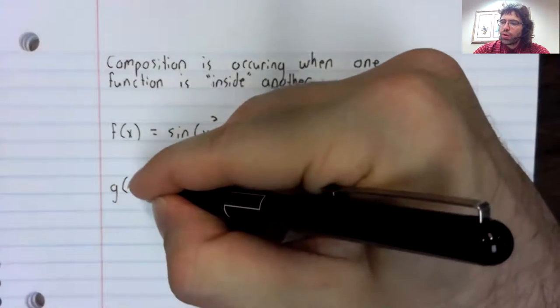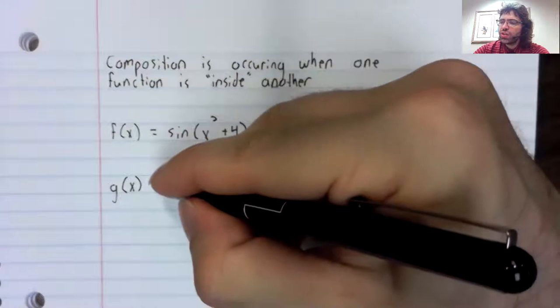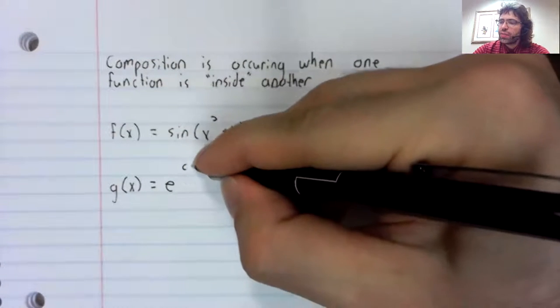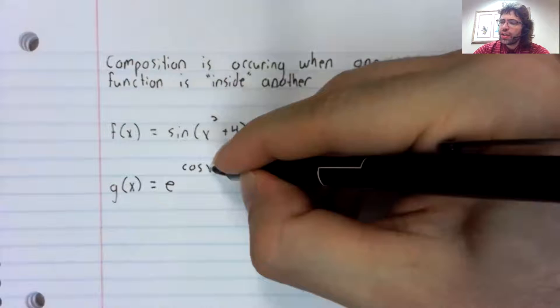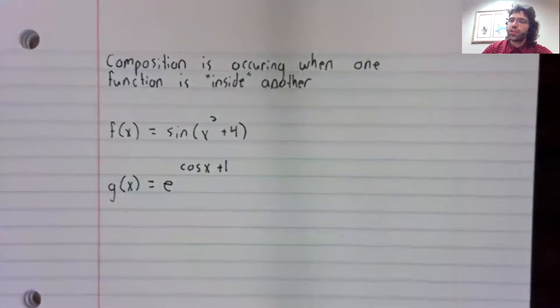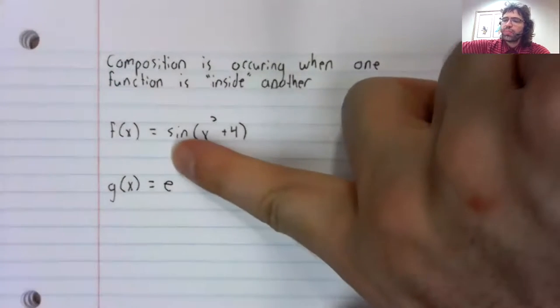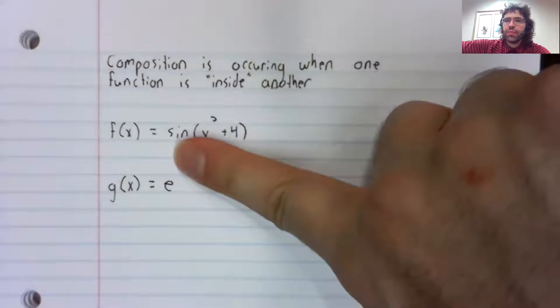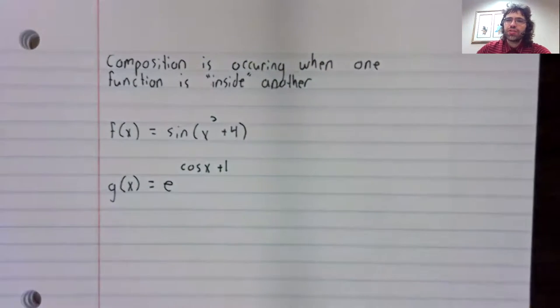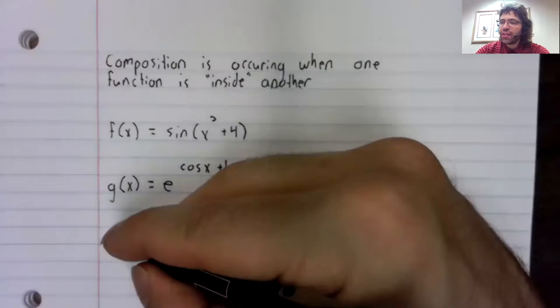Or g of x equals e to the cosine of x plus one. The exponential function is a function, and it's got this complicated expression inside of it.